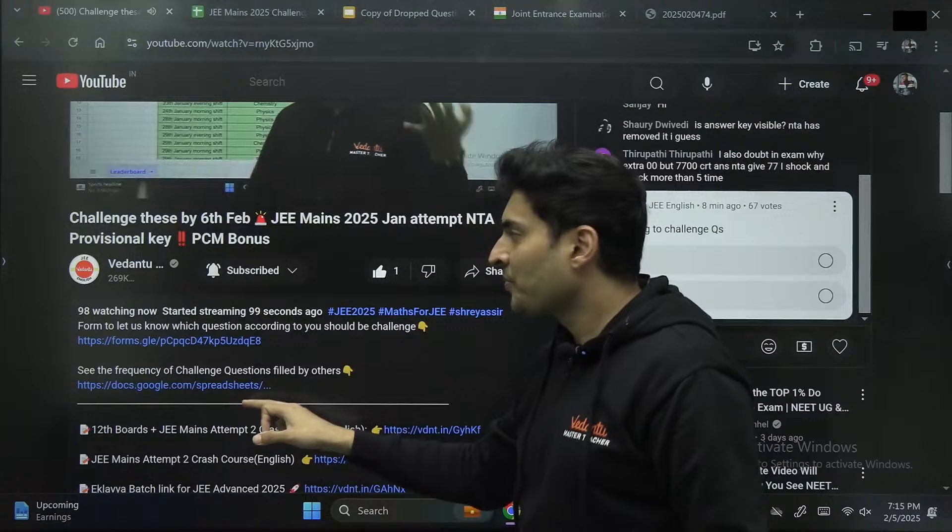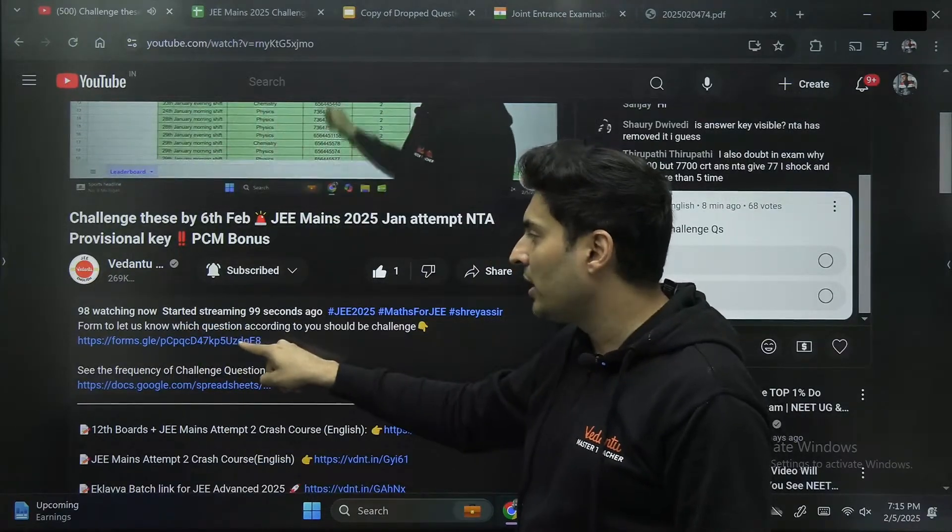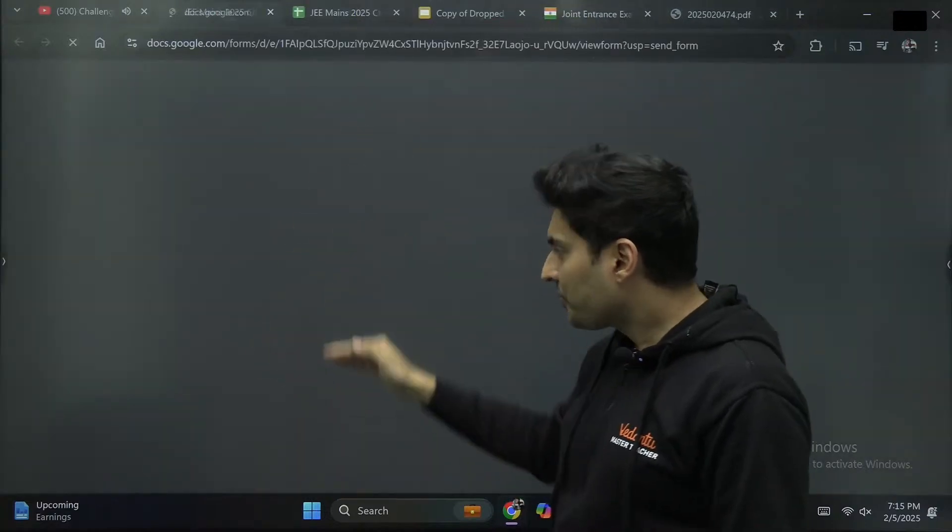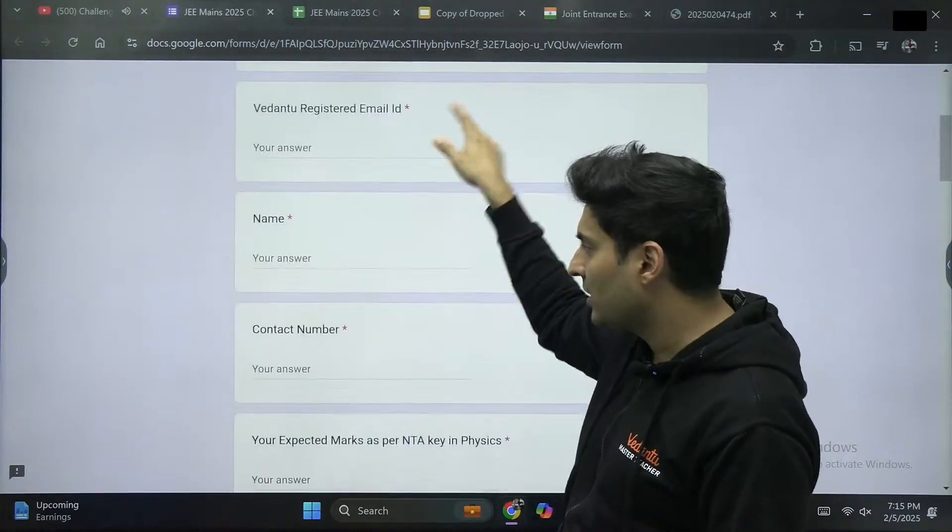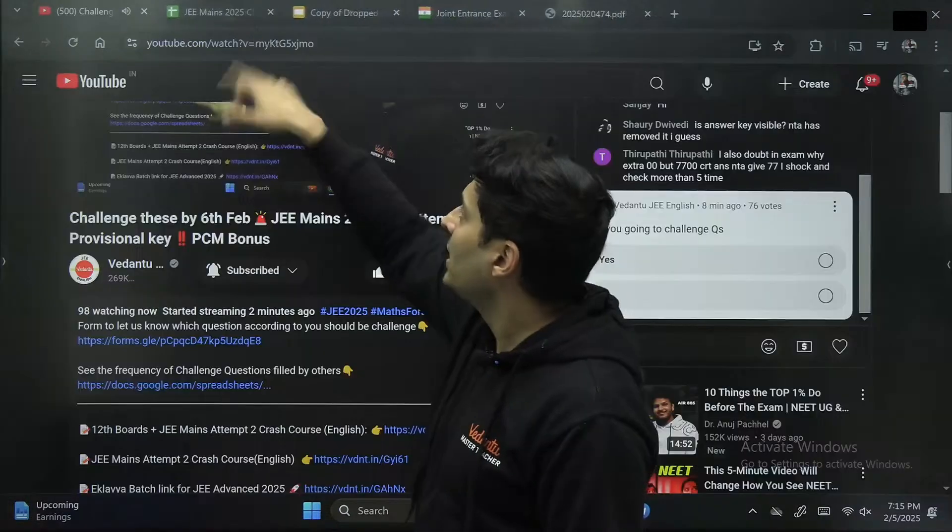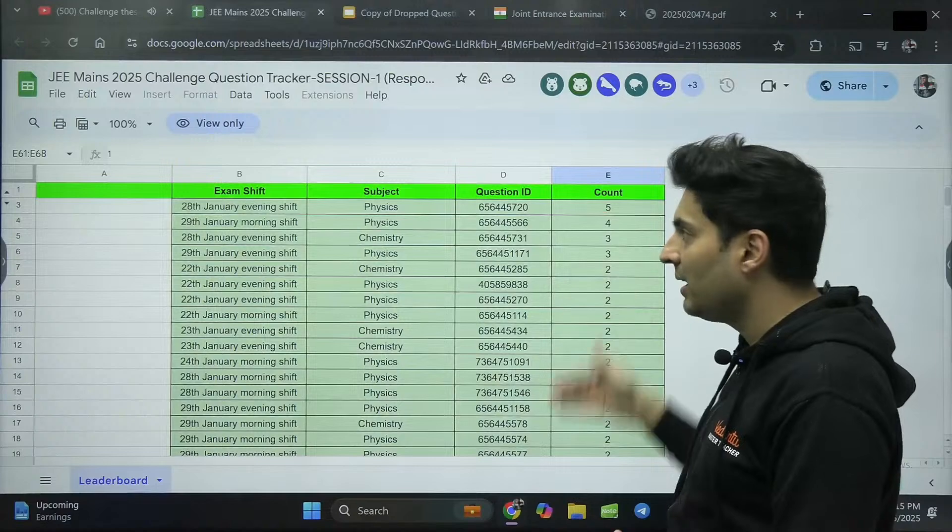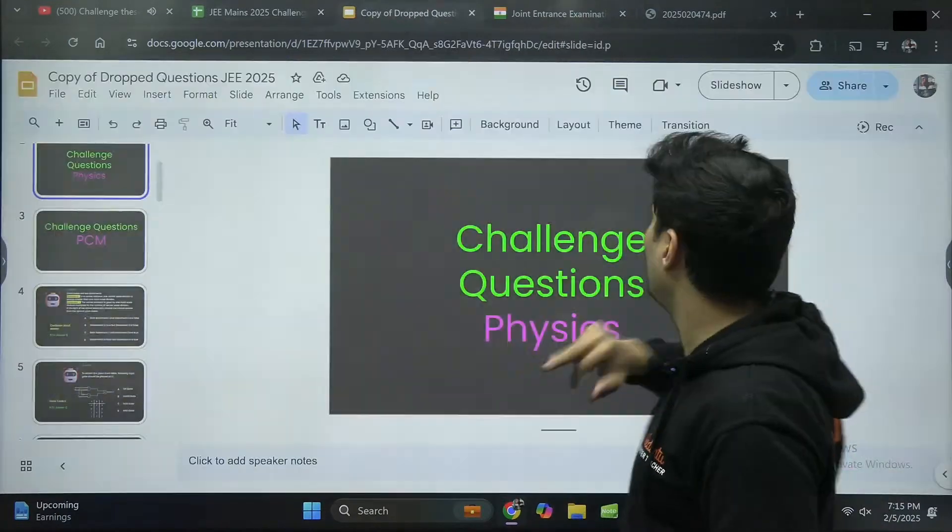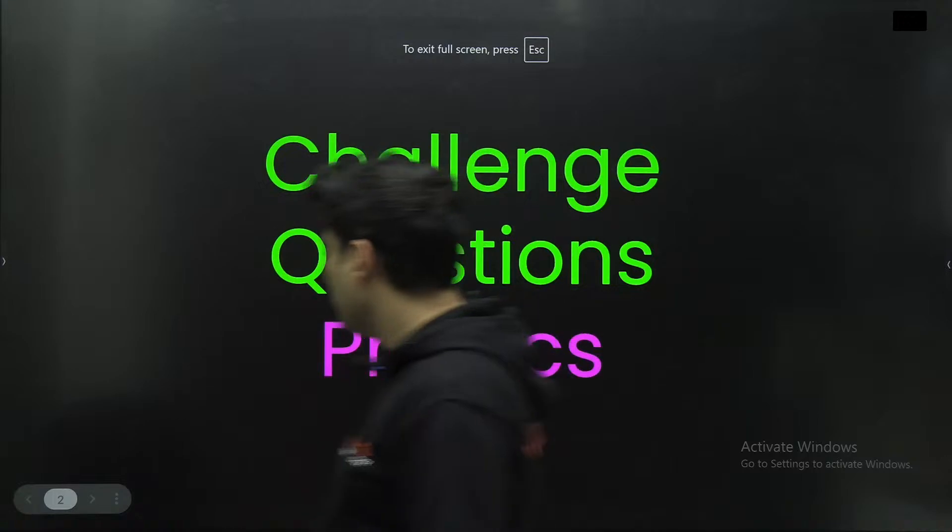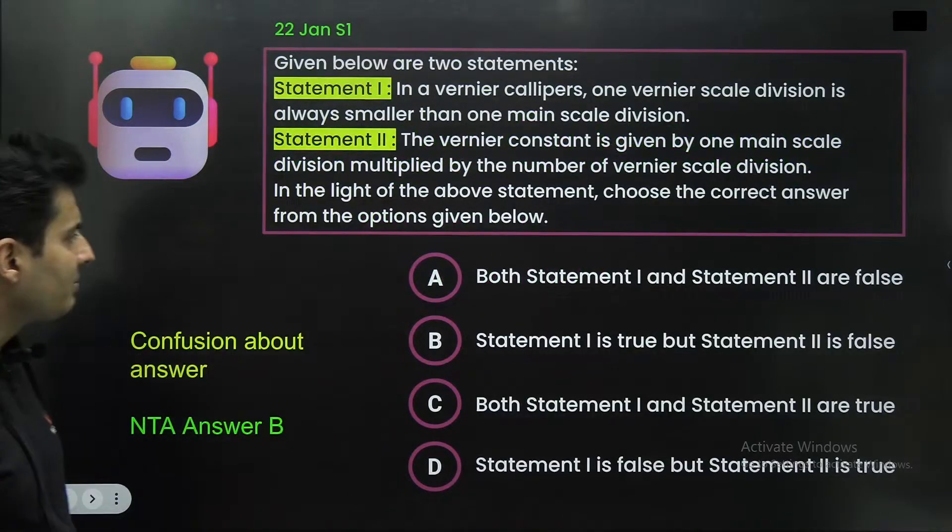The link is there in the description box. And please help others by filling this form, which questions according to you should be challenged. So once you click on this link, you also can help others as to which questions do you think should be challenged. And obviously, this particular sheet will get updated. Now, I have also shown some questions, which questions should be challenged.